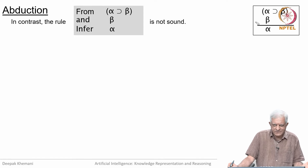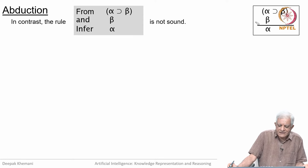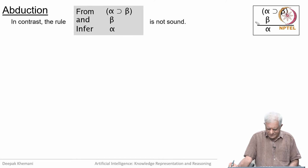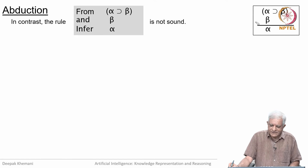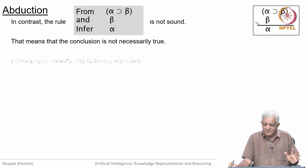Deduction is sound because it is based on valid entailment — given alpha implies beta and alpha, beta is necessarily true. Abduction is the other rule: given alpha implies beta and beta, you infer alpha. But this rule of inference is not sound, because after reasoning with the truth table we see that alpha is not necessarily true. If you use this rule, the conclusion is not necessarily true.